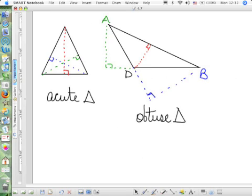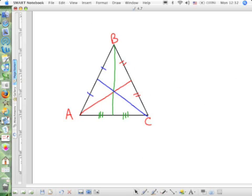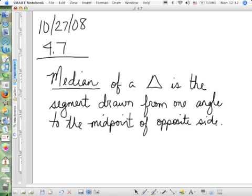Let's go back. Every triangle has three medians. And all three of the medians are found inside. And what do they do? Bisect the sides.